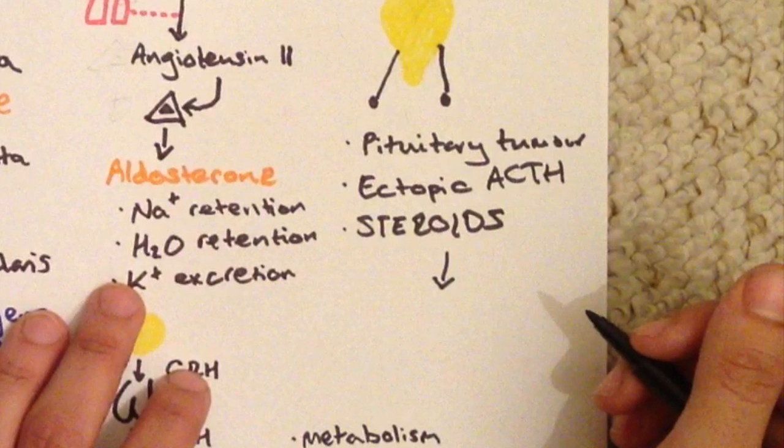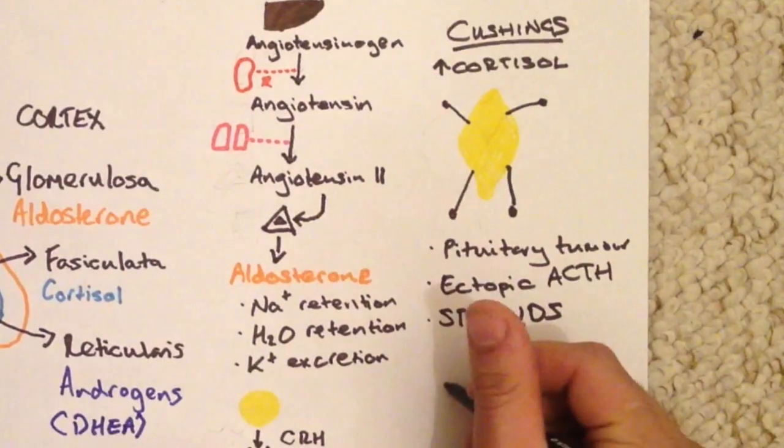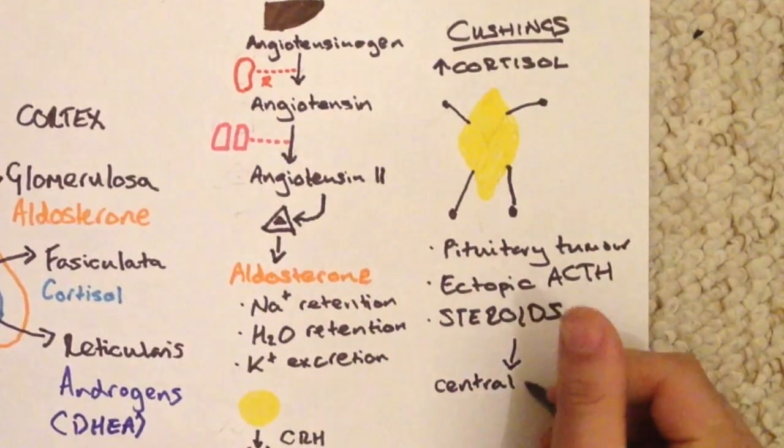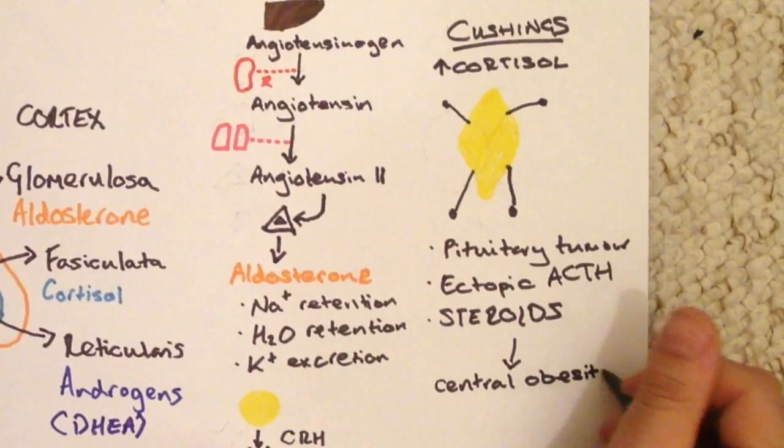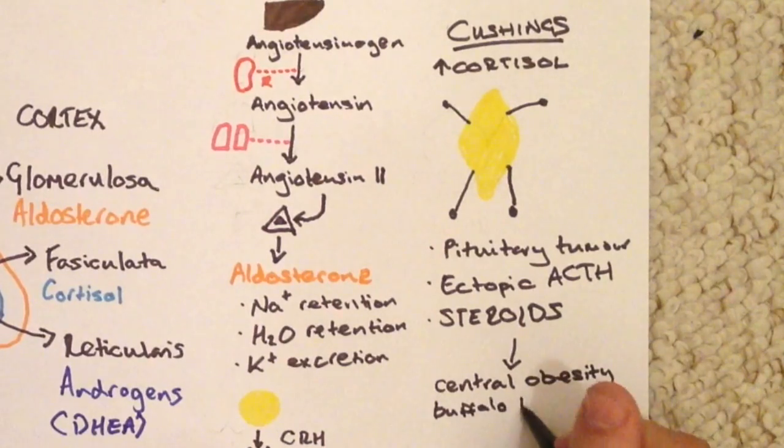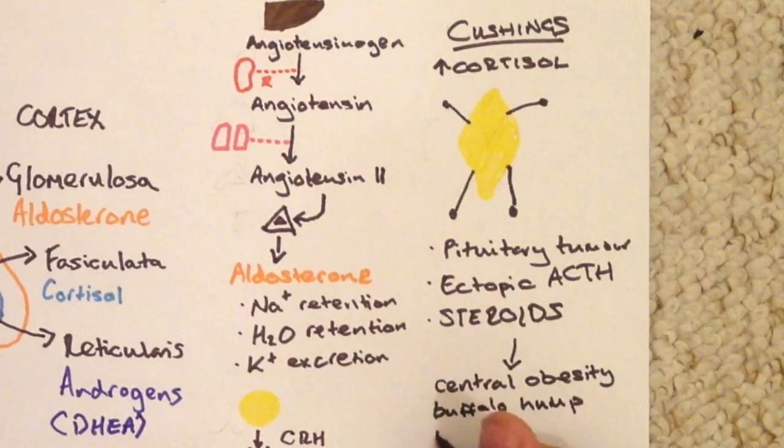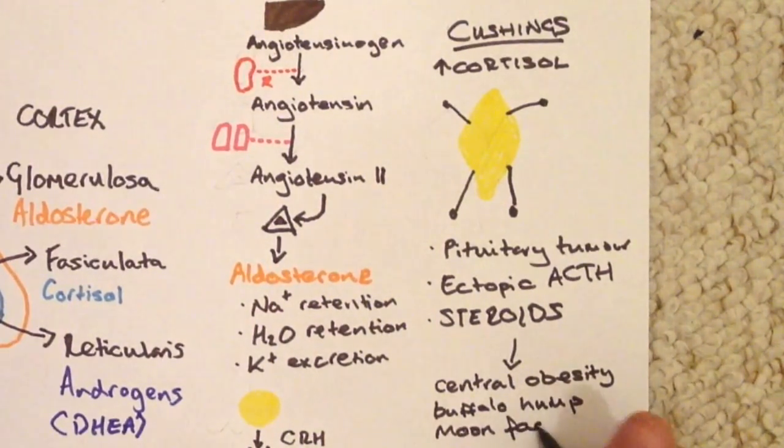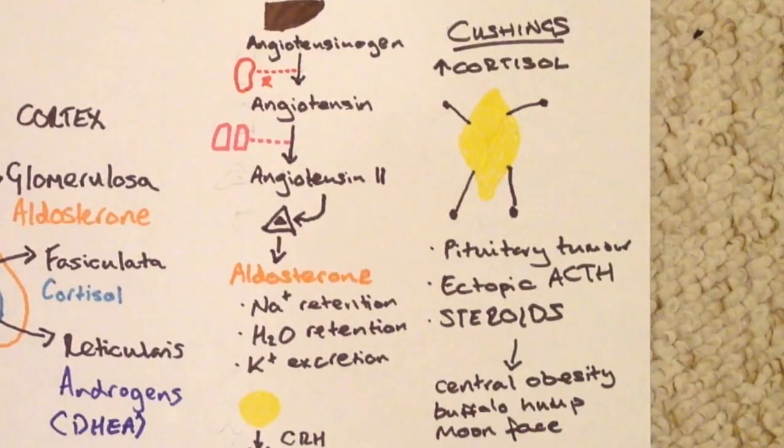So the features patients get - you can think about this funny drawing I've drawn - it's known as a lemon on matchsticks. Patients get central obesity with proximal muscle loss, so they've got very thin arms and legs but then quite a big central body.